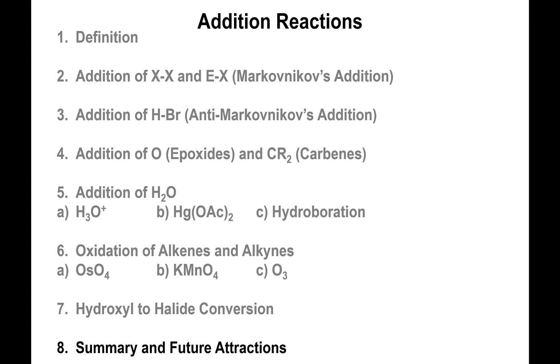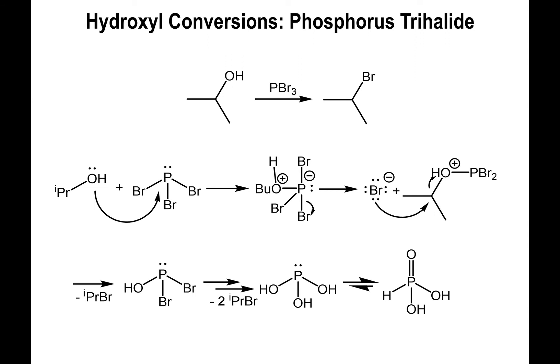Maybe you want to do an SN1 reaction or perhaps an elimination reaction. A common strategy would be to start with an alkene that's not exactly the one you want, undergo an addition reaction that introduces the hydroxyl group, then turn the hydroxyl group into bromine or chlorine, and then undergo the proper elimination with the proper reagent to move that alkene to a different position. That's the kind of thinking to apply when using these reagents in synthesis problems.